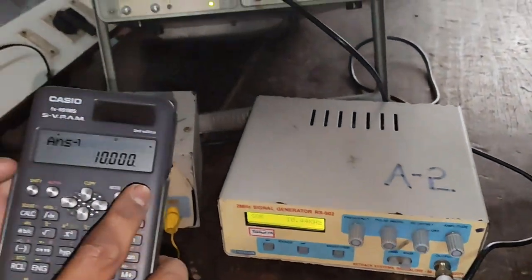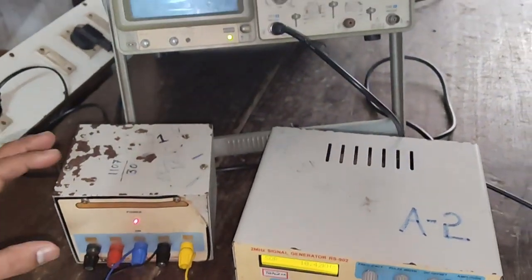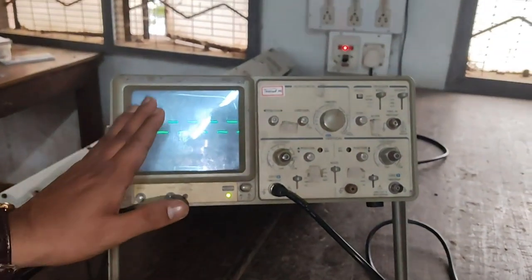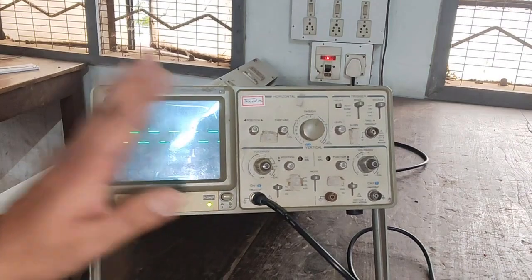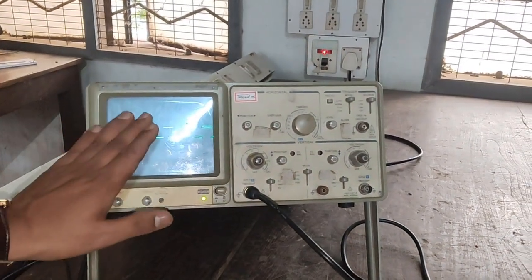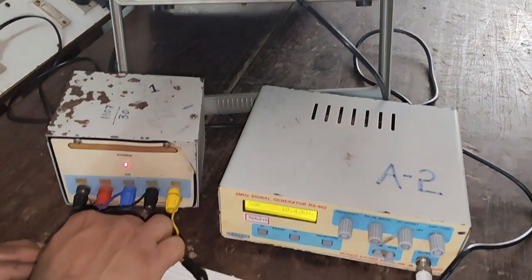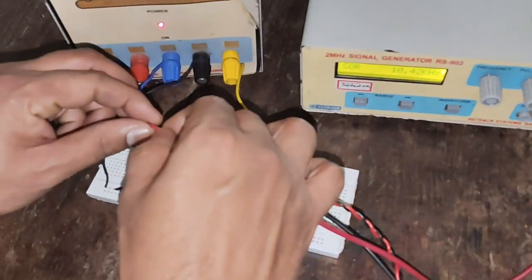Now the function of integrator is it performs the integration of the input value. The integration of square wave is triangular wave. We have to obtain this value triangular wave at the output. And now we will check the output at the pin number 6 in the circuit.